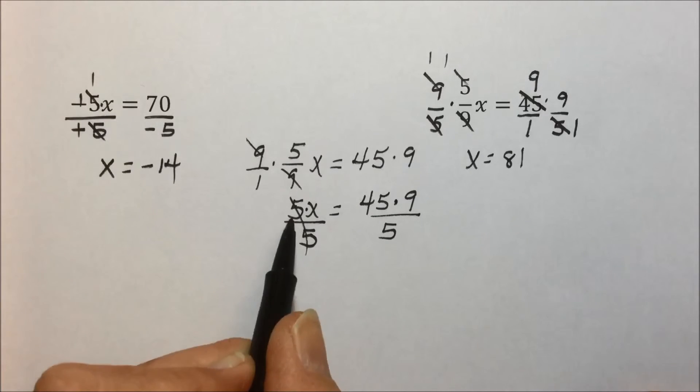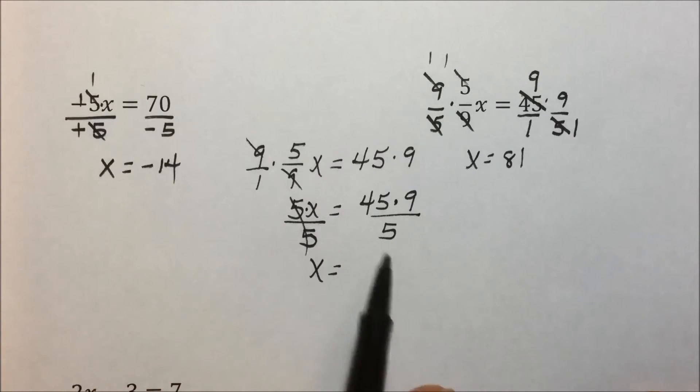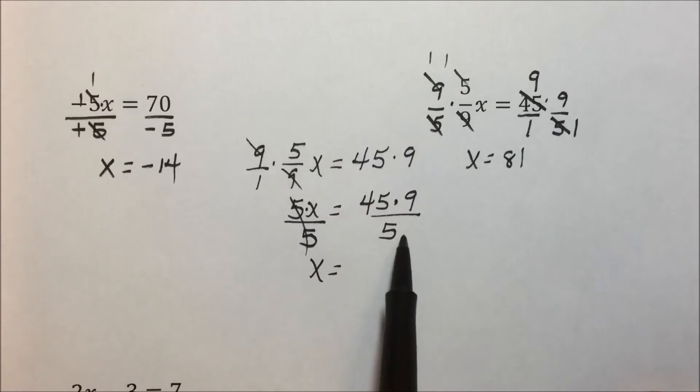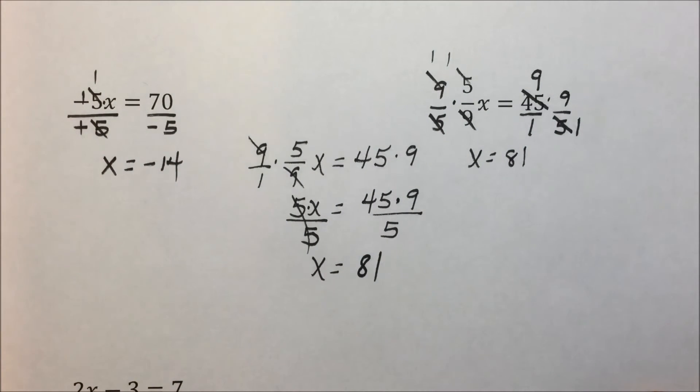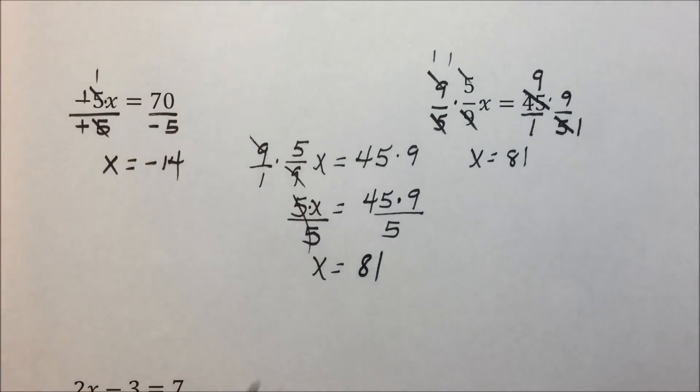This should look familiar, 5 divided by 5 leaves x. The 45 times 9 divided by 5 that we just saw a minute ago results in 81. So it's your choice, two steps to eliminate and solve for the variable, or all in one step by multiplying by the reciprocal.